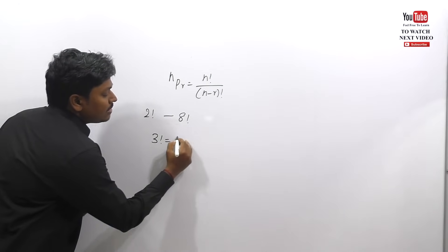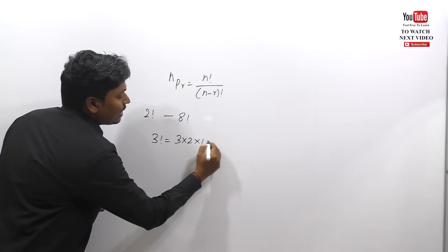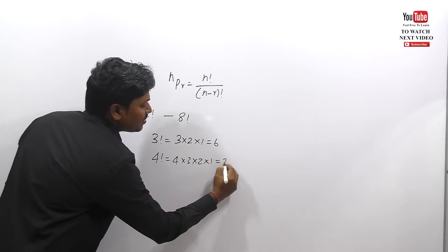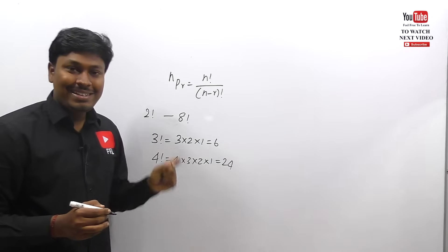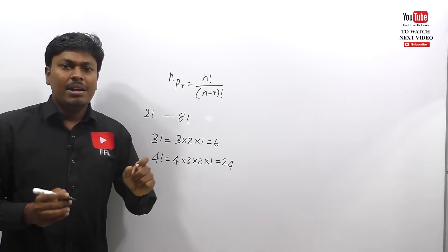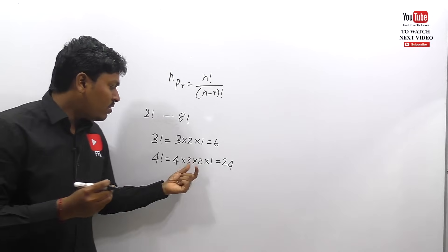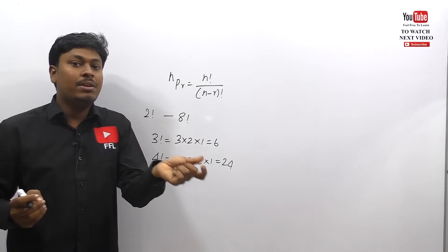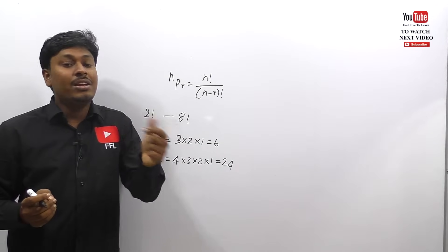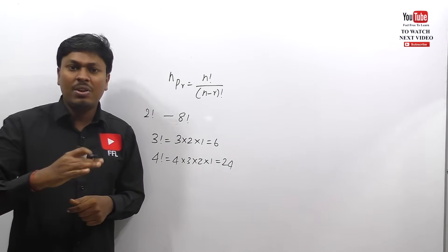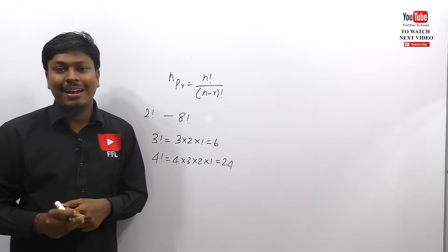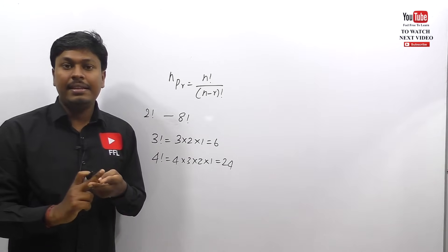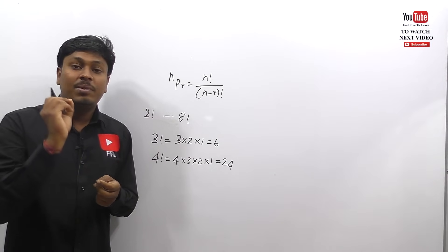Another advice: memorize from 2 factorial till 8 factorial. 3 factorial is 3 × 2 × 1 = 6. 4 factorial is 4 × 3 × 2 × 1 = 24. 5 factorial is 120. 6 factorial is 720. 8 factorial is 40320. Since exams are time-based, you should not calculate from scratch every time — memorize all the answers so you can easily crack the answer.